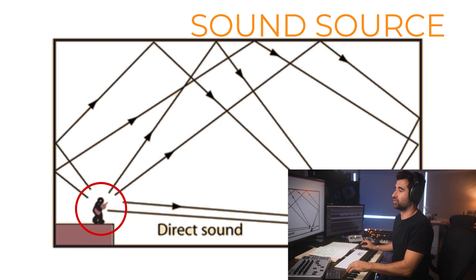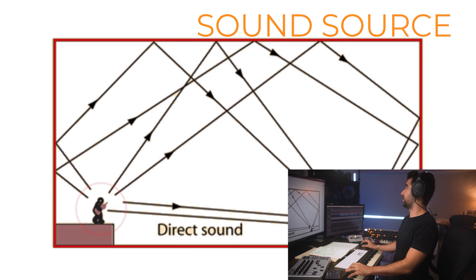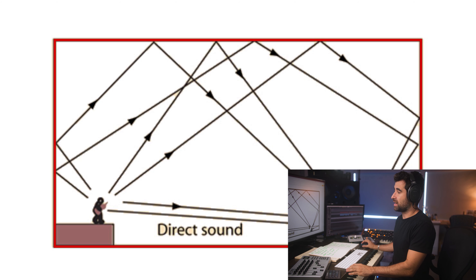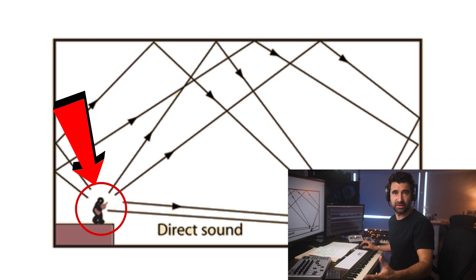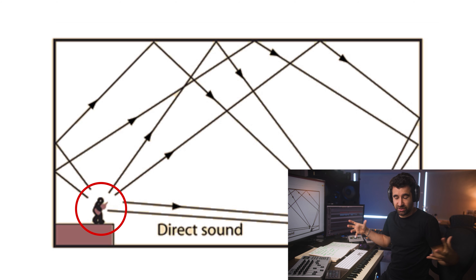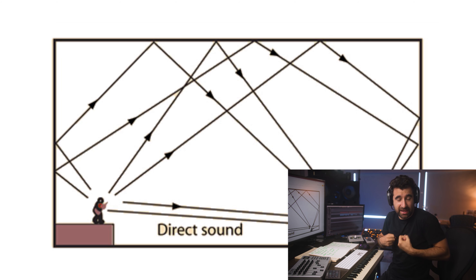Today we're going to talk about EQ — how to use EQ, when to use EQ, when we are actually composing to make our mock-up. I say mock-up specifically meaning composing orchestral music using sample libraries, to gain clarity, to sound a little bit more transparent. We're not thinking that much about the sound at this point; we're composing, thinking about the music, the arrangement, the orchestration. But we're going to have a series of EQ plugins set in specific tracks that will help avoid a couple of problems.